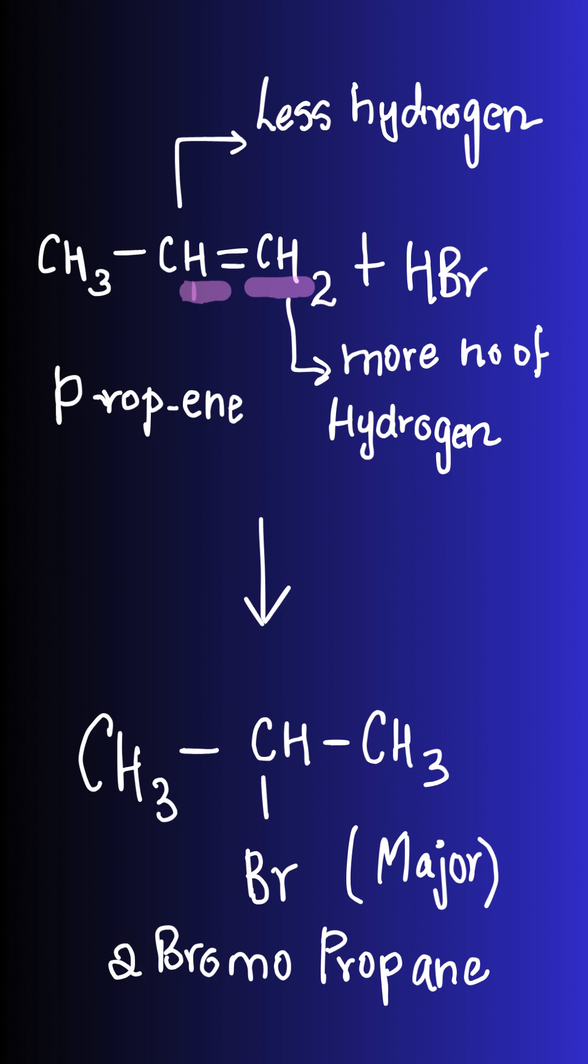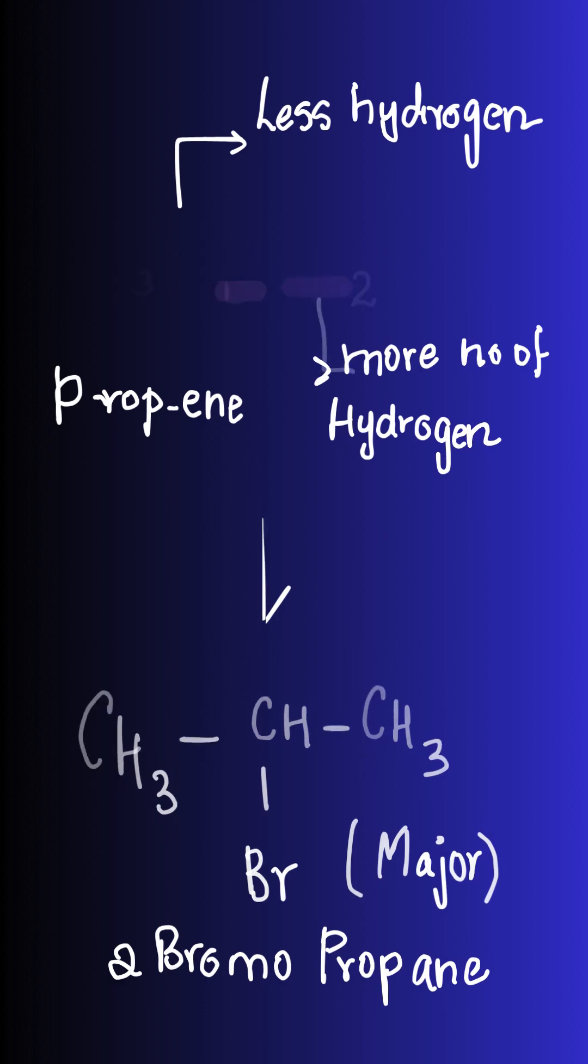As it has the greater number of hydrogens, the Br radical gets added to CH on the left side of the bond with less hydrogen. Hence the product we get is 2-bromopropane.